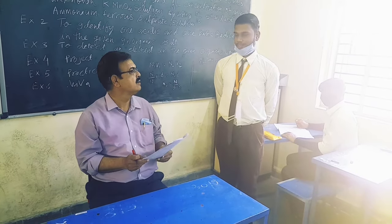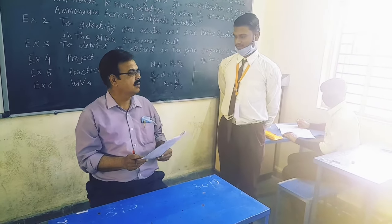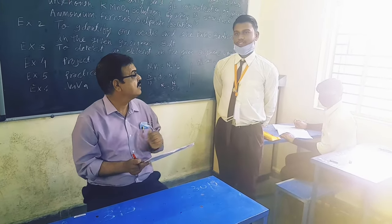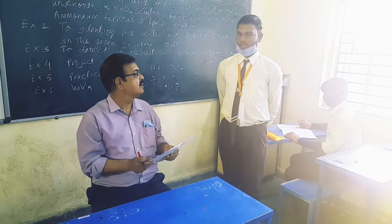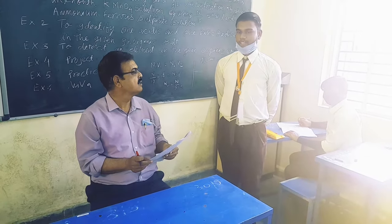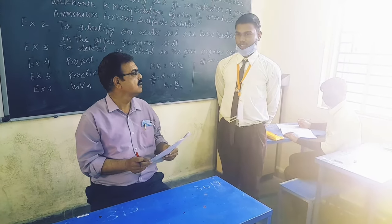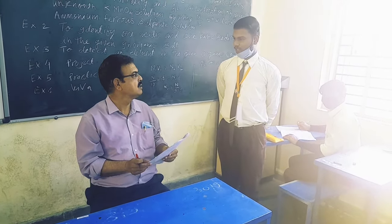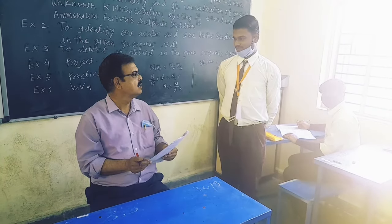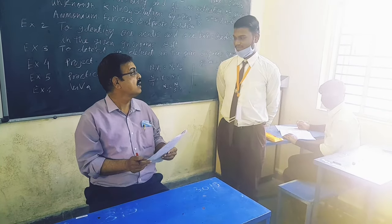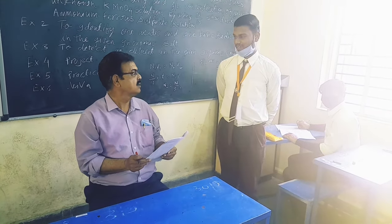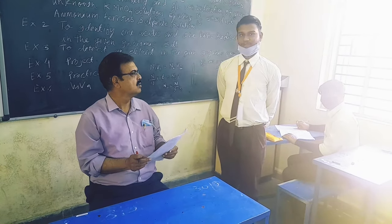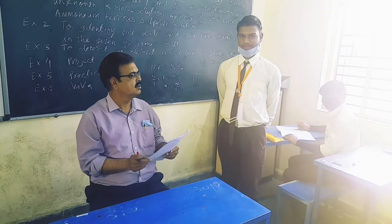Sulphate acid radical. What is the test for sulphate? Salt solution plus water plus barium chloride solution — a white precipitate is obtained.